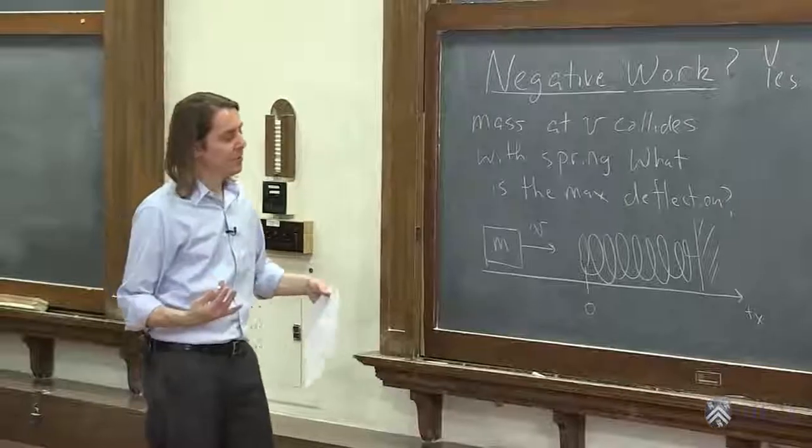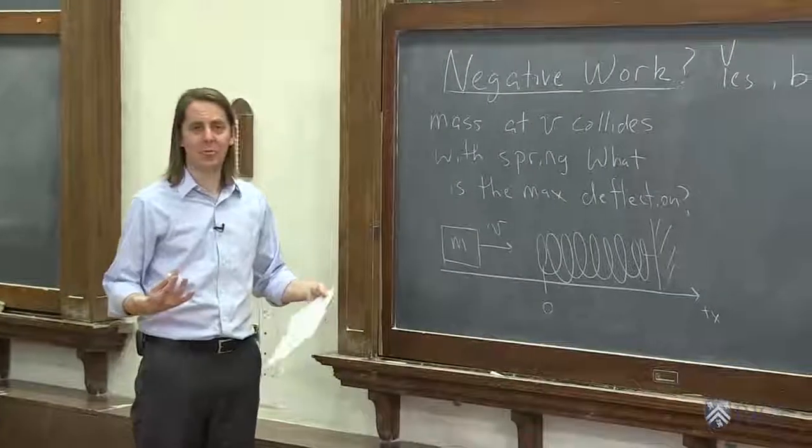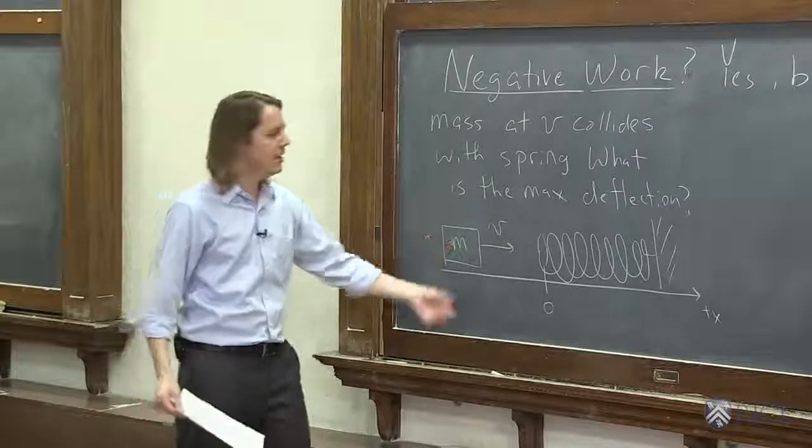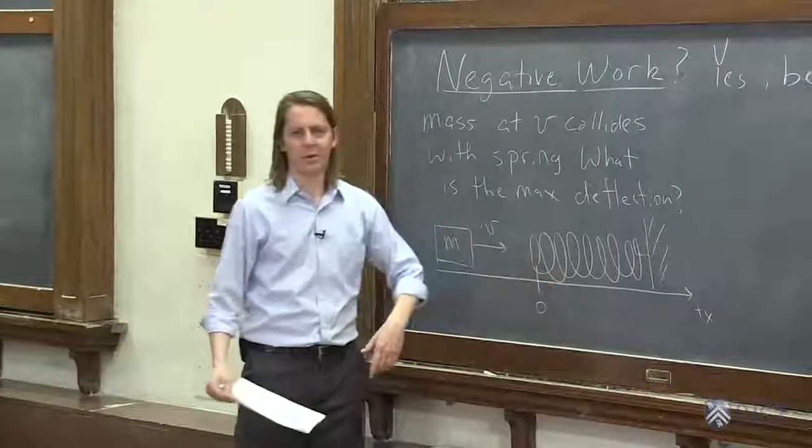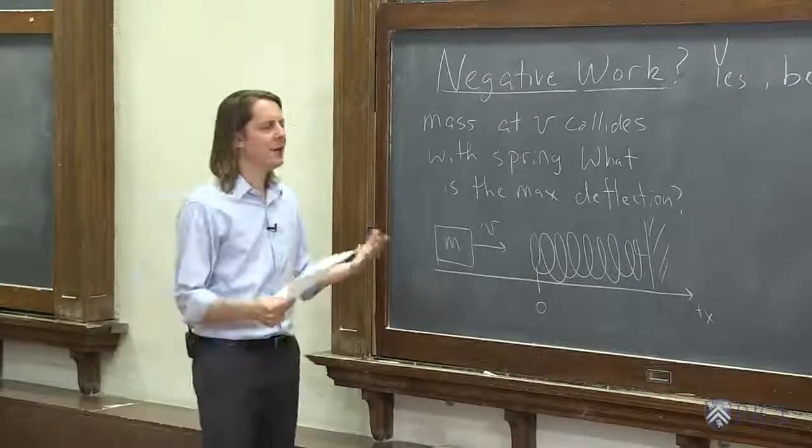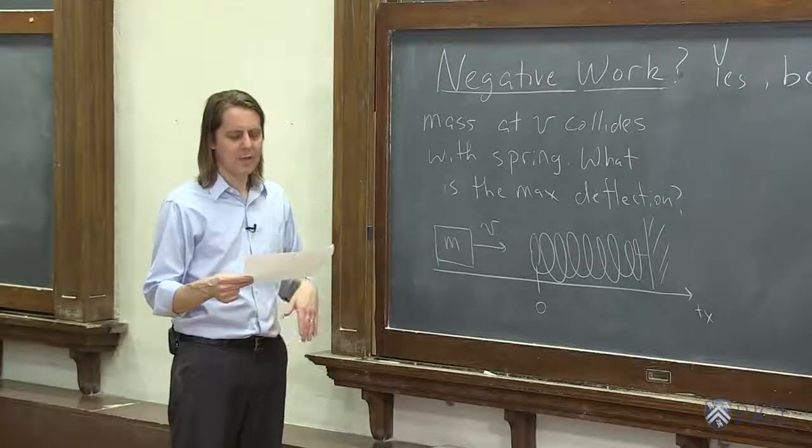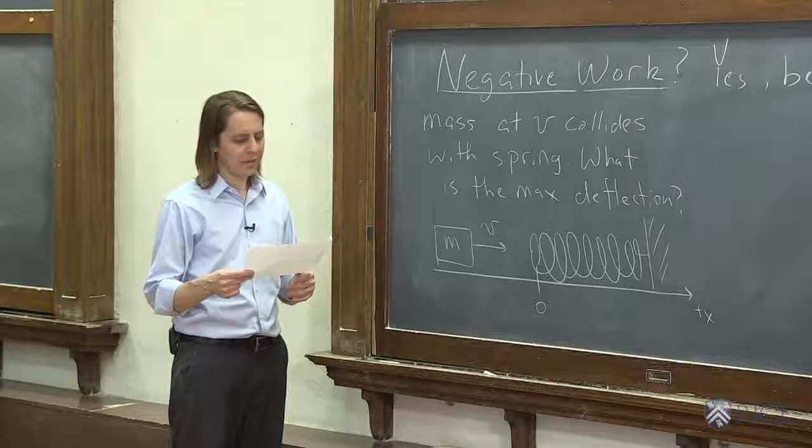If you have a head for conservation of energy and you've done these before, you know that you just set one half mv squared equals one half k deflection squared and you're done. But let's think about it carefully in terms of systems and external and internal and positive and negative and see if we can do it in careful detail.